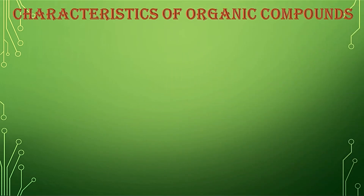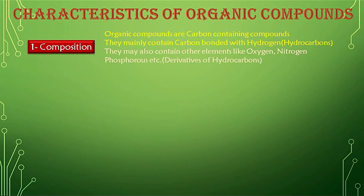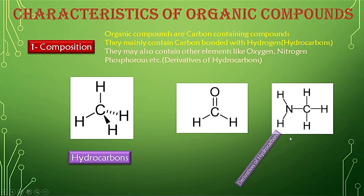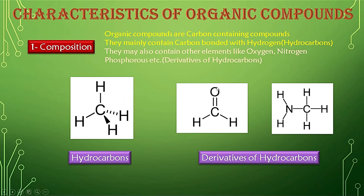Now we are going to discuss some characteristics of organic compounds. The first one is composition. Organic compounds are carbon-containing compounds — they mainly contain carbon bonded with hydrogen, and therefore are called hydrocarbons. They may also contain other elements like oxygen, nitrogen, and phosphorus, in which case they are called derivatives of hydrocarbons. For example, methane is a simple hydrocarbon containing only carbon and hydrogen, while other structures are derivatives that also contain oxygen and nitrogen.